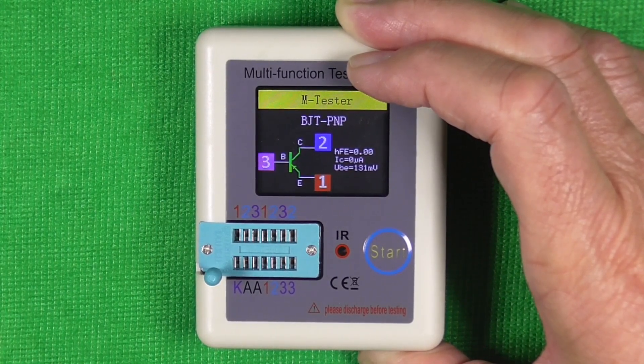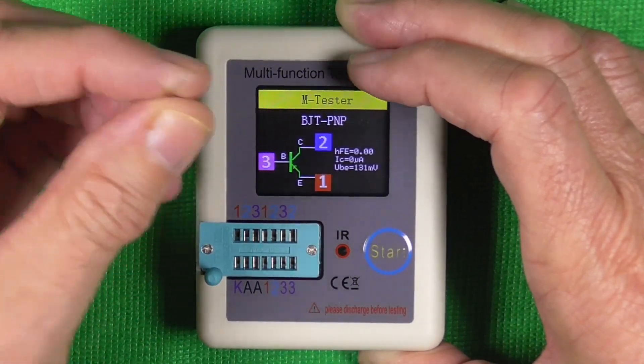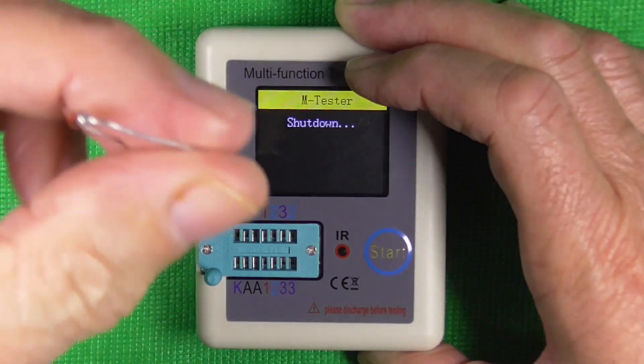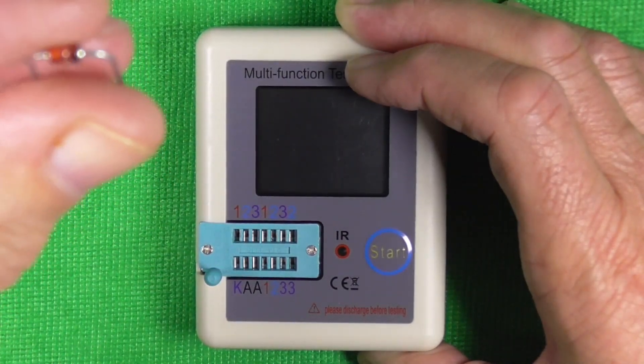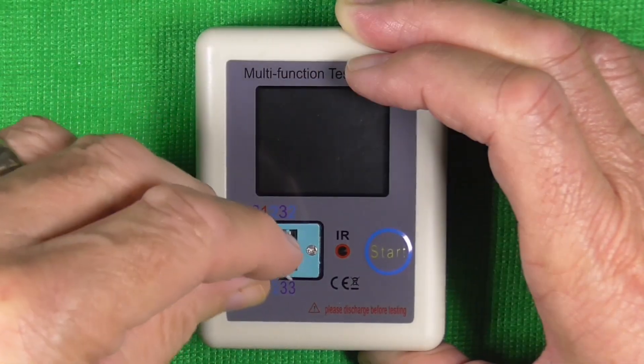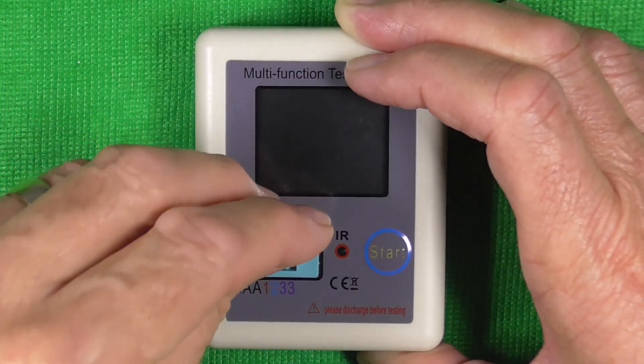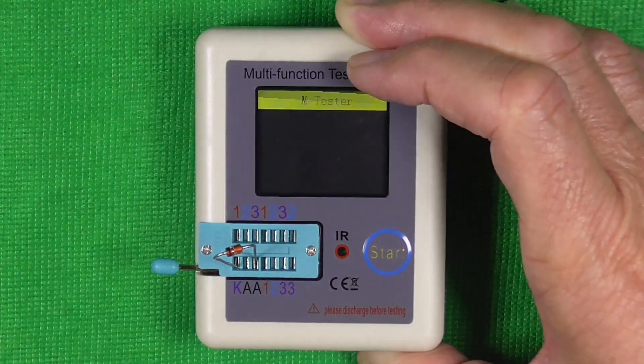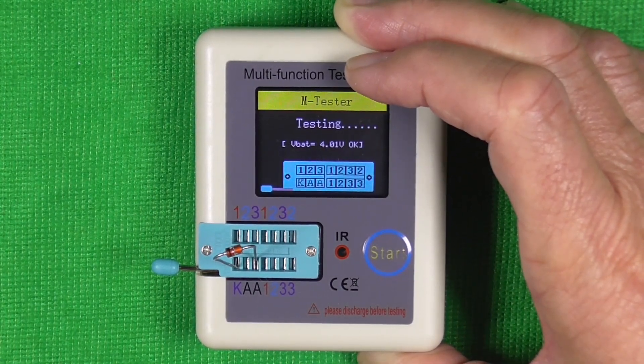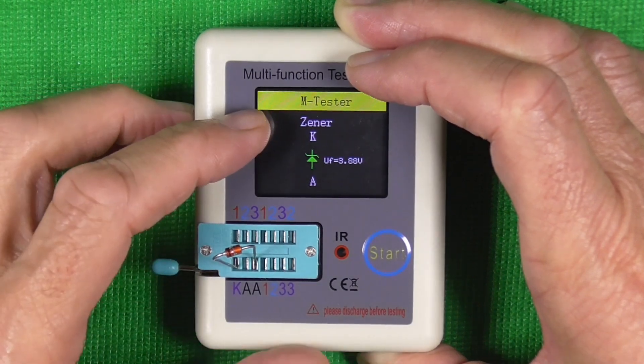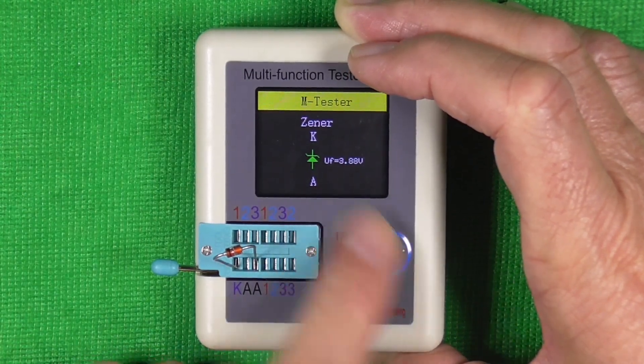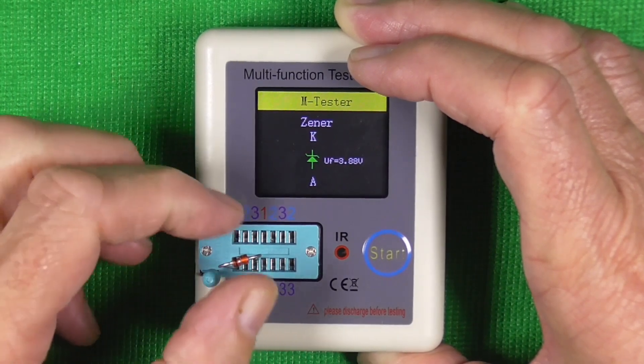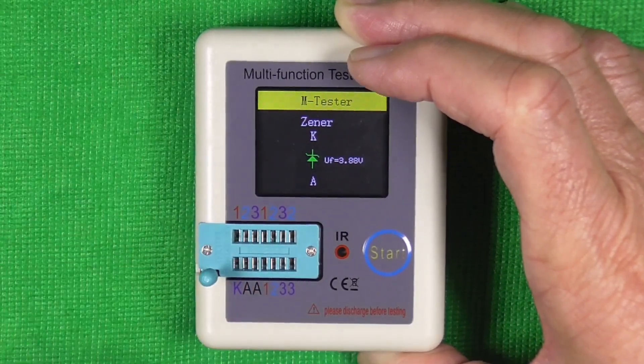We can also test diodes. Now I think from my days of repairing TVs, this is probably going to be a Zener. So pop that in, clamp it. Yeah, Zener diode, UF 3.88 volts. So that's that.